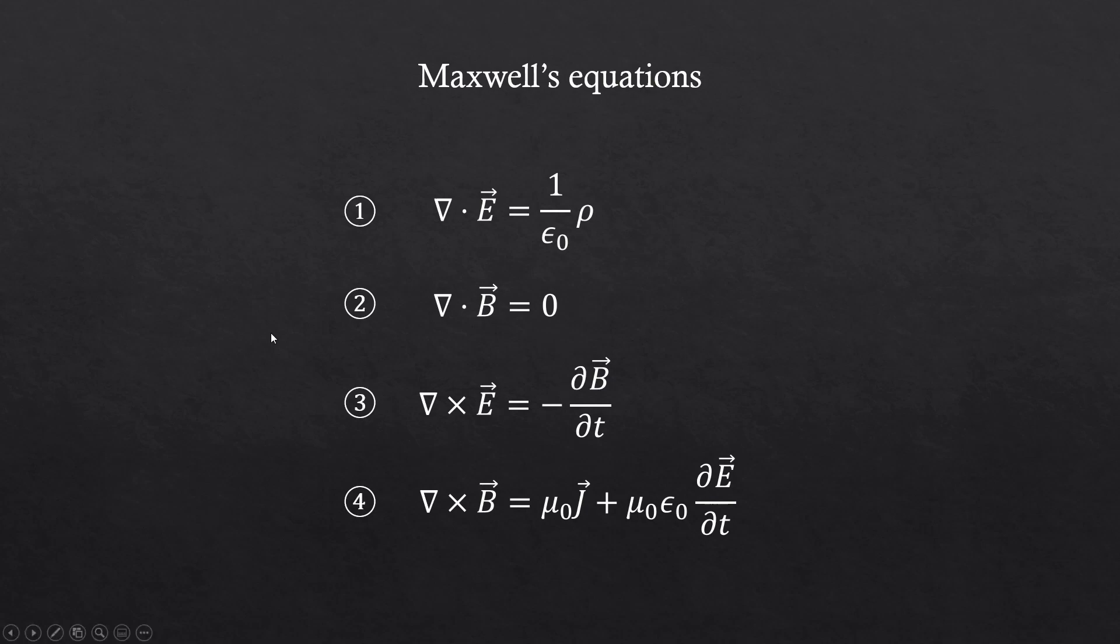whereas the second equation tells that magnetic fields don't, but rather curl around according to the fourth equation. And the third equation tells how electric field could also curl in the presence of the magnetic field.